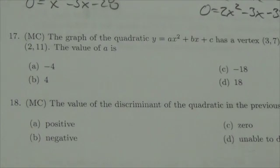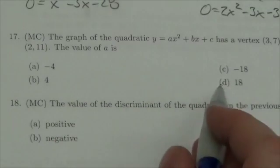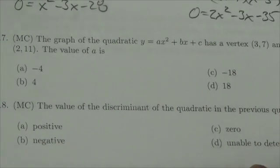Okay everybody, we're working through the quadratic functions and equations review. We're on question 17. The graph of the quadratic y equals ax squared plus bx plus c has a vertex at (3,7) and passes through the point...